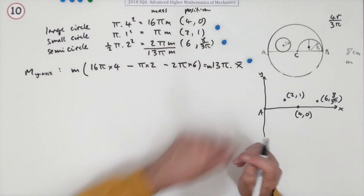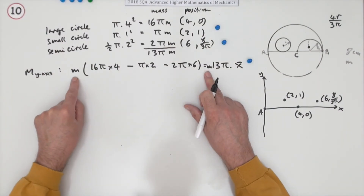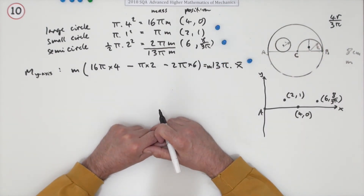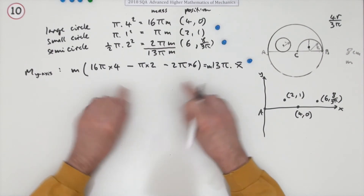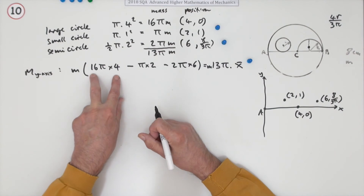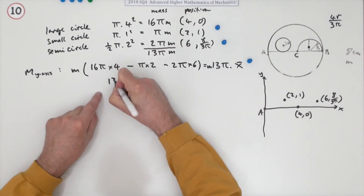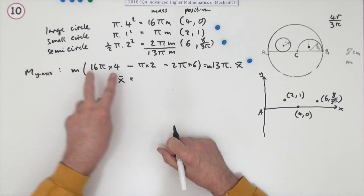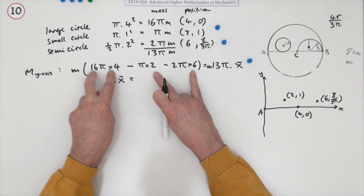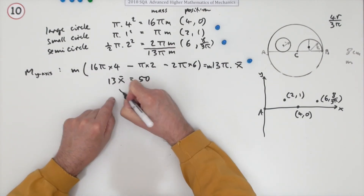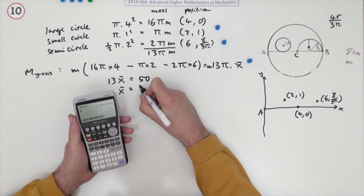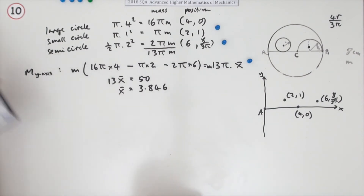Since it's a uniform lamina the M's cancel, and since all terms involve π with no extra π factors, the π's cancel too. So 13 x̄ = 64 − 2 − 12 = 50, giving x̄ = 50/13 ≈ 3.846. That's worth a mark.